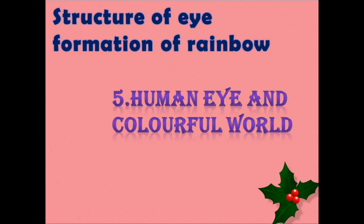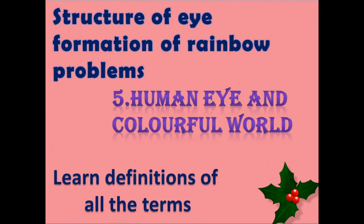Next, formation of rainbow. Formation of rainbow is very important — it is compulsory to study. Choose problems as well. Finally, learn definitions of all the terms: accommodation, least distance of distinct vision — prepare every definition. Definitions are very important because one-mark questions matter. Don't leave anything. Prepare well.